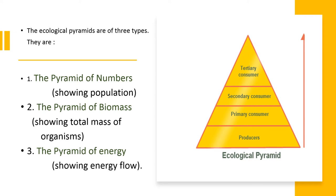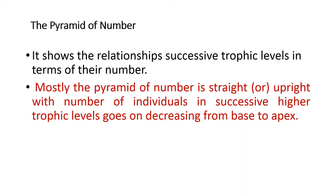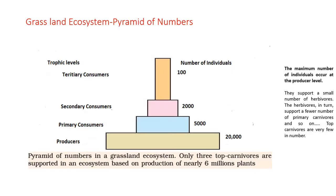Pyramid of numbers speaks about the number of populations or number of organisms present in an ecosystem. It shows the relationship between successive trophic levels in terms of their number. Mostly, the pyramid of numbers is upright, with the number of individuals in successive higher trophic levels going on decreasing from base to apex.